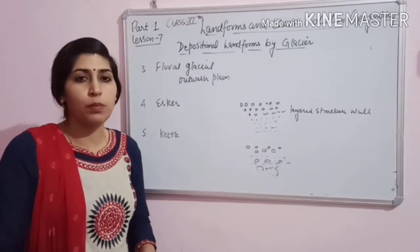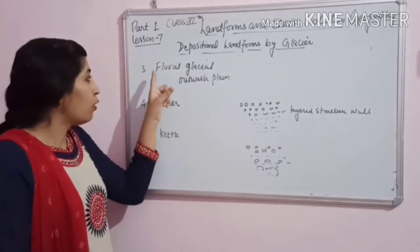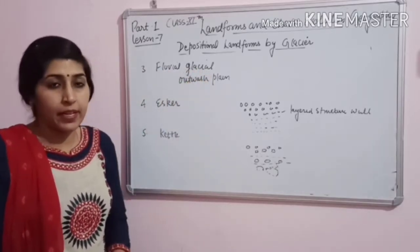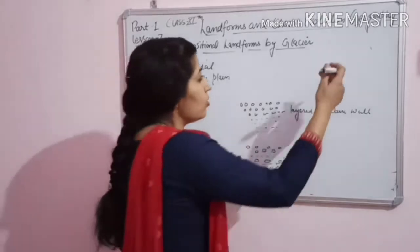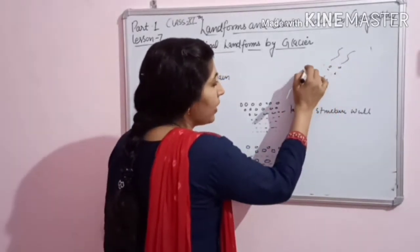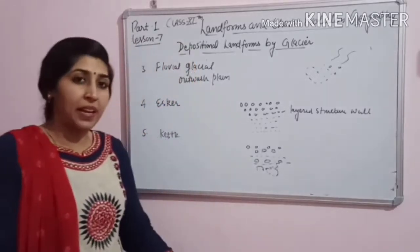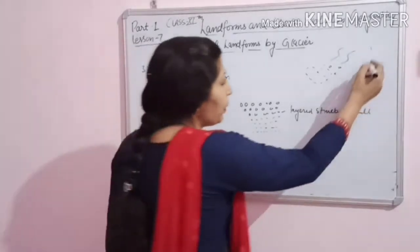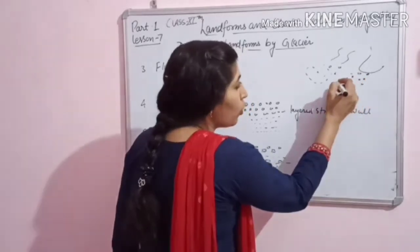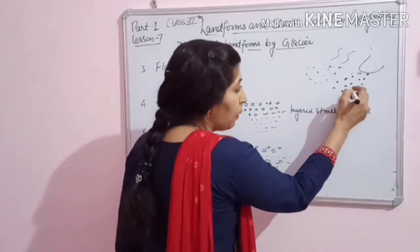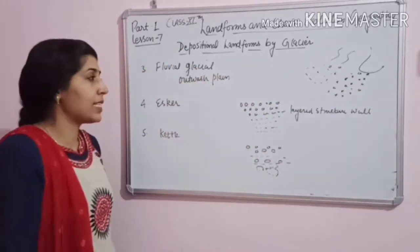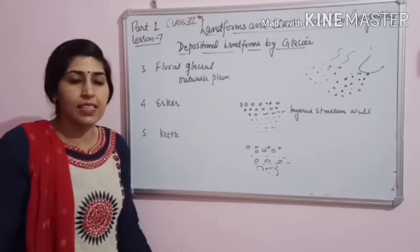Next landform made by the glacier is fluvioglacial, or you can say outwash plain. Just as a river brings sediments along with it and spreads those sediments on a plain — that is called an alluvial plain — similarly, the glacier brings sediments along with it and deposits them in a plain, in a very large area. That area is called fluvioglacial or outwash plain.